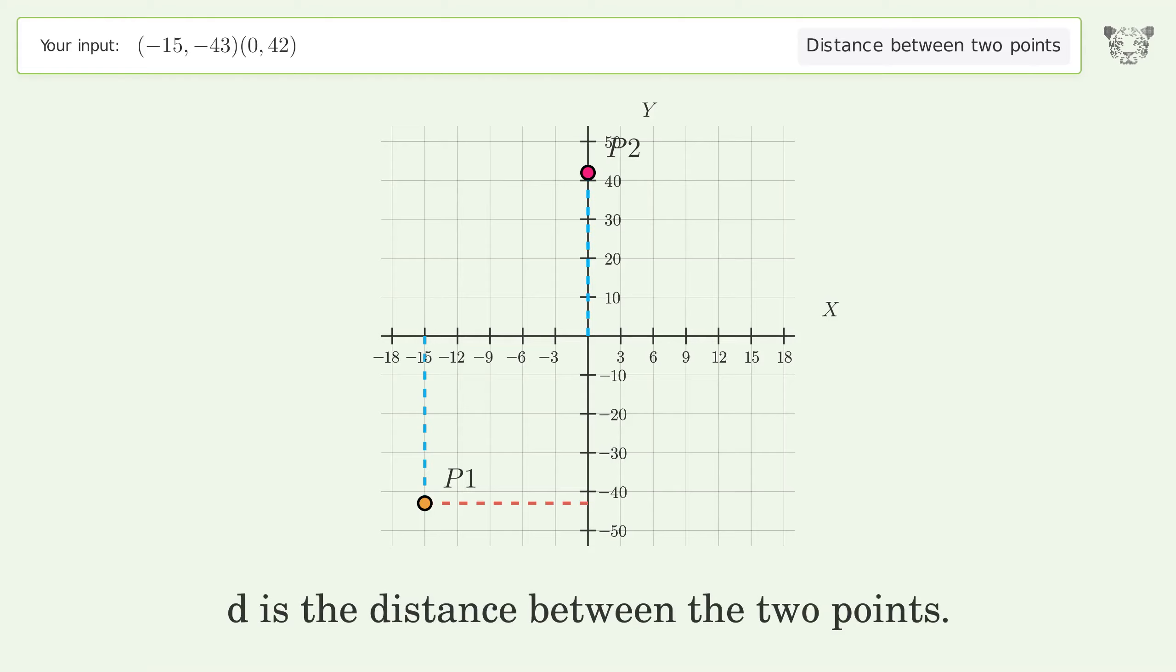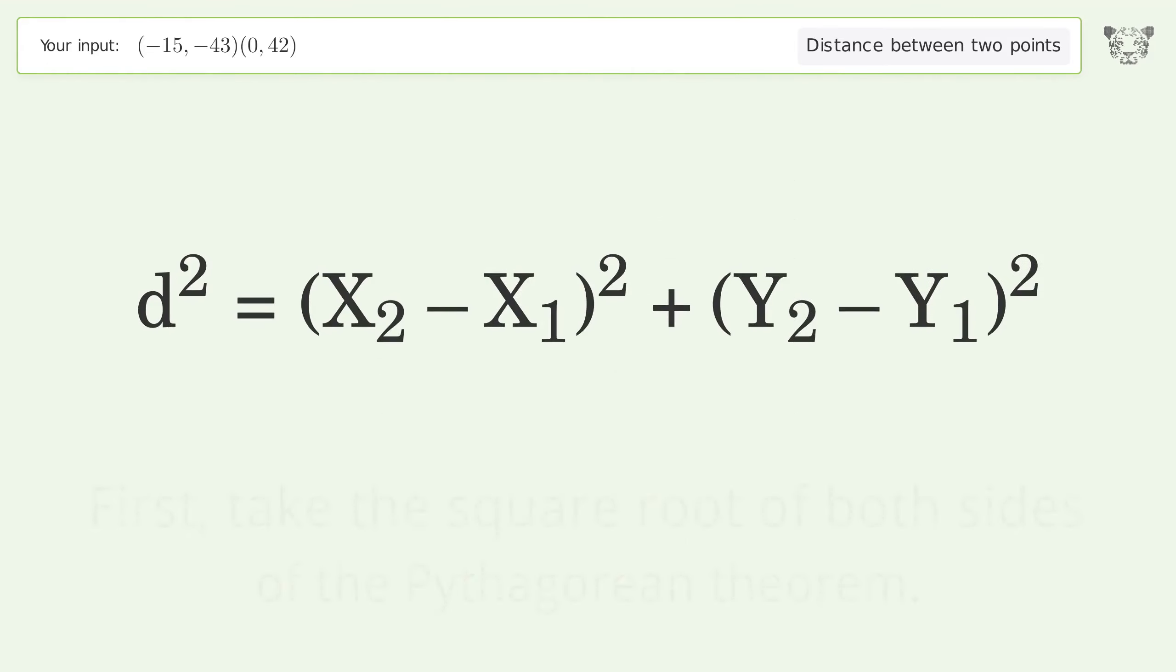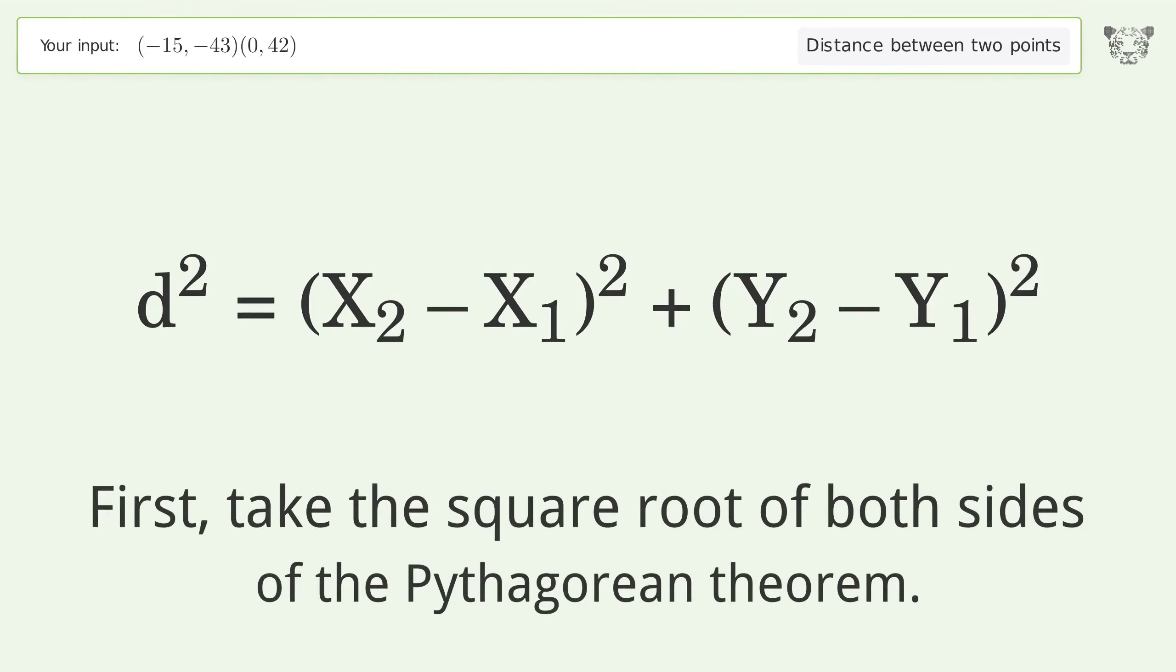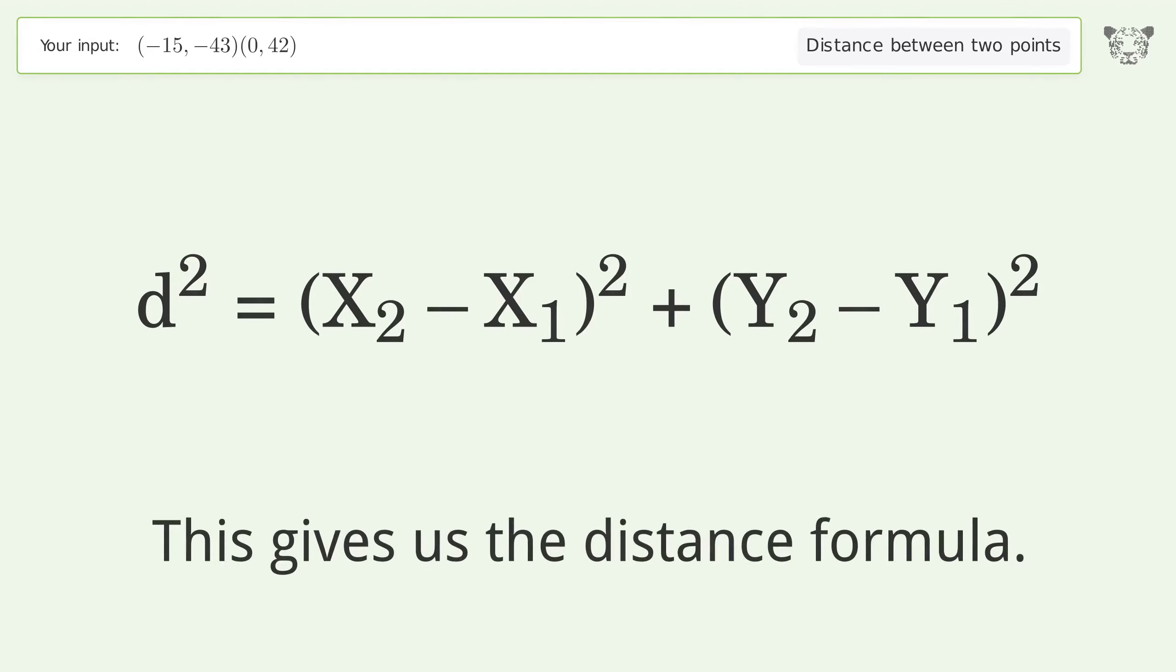d is the distance between the two points. First, take the square root of both sides of the Pythagorean theorem. This gives us the distance formula.